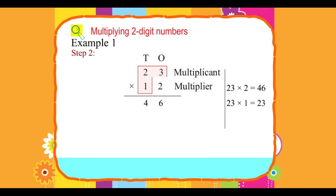23 times 1 equals 23. Since you are multiplying with tens first, remember to put a 0 first.